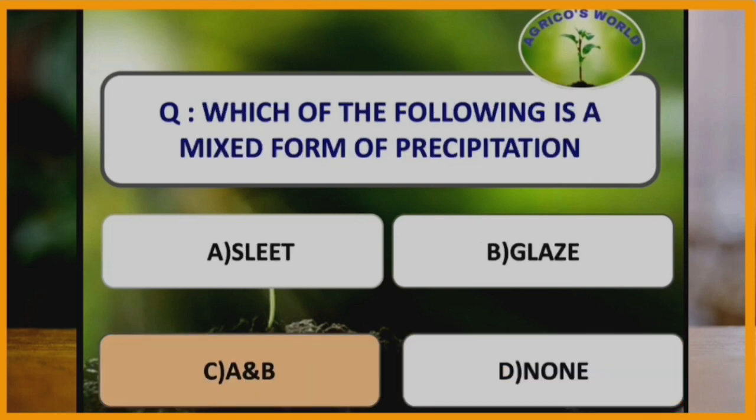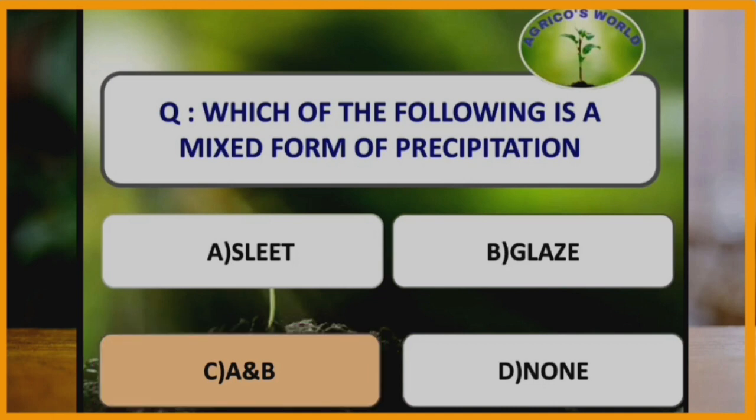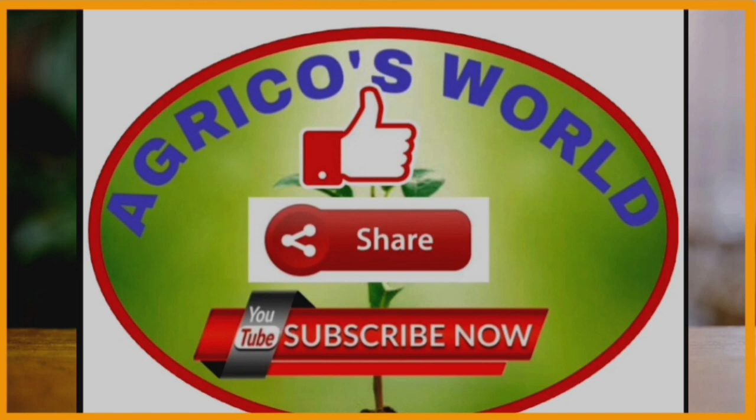Sleet and glaze are the mixed forms of precipitation. Thank you. Please like, share, and subscribe to our channel, Agrico's World.